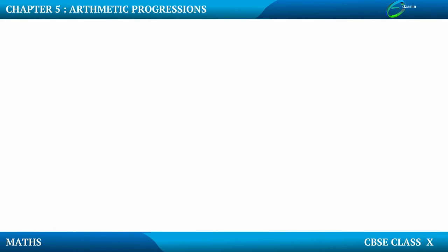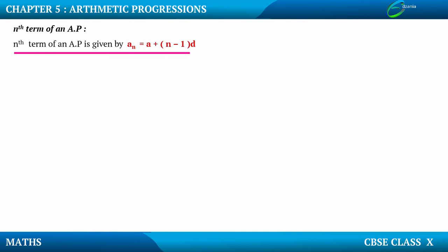Arithmetic Progression. In the last video we had seen terms related to AP. Now we will see how to find out the nth term of an AP, which is also called as the last term of an AP. The nth term of an AP is given by: an = a + (n-1) × d. This is the formula to find out the nth term of an AP.